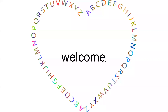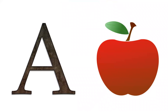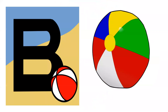Hey guys, welcome to my channel. Today we learn about the English alphabet. Let's get started! Let's learn about alphabets. The first letter is A — A for apple. Next, B — B for ball.